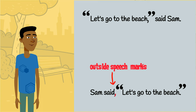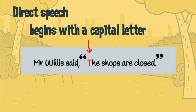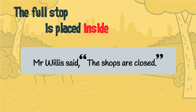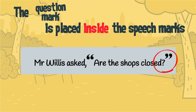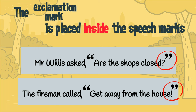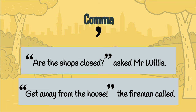Direct speech begins with a capital letter, even in cases where the direct speech is in the middle of the sentence. Where direct speech ends a sentence, the full stop is placed inside the speech marks. This is the same for question marks and exclamation marks, as long as it is the direct speech that contains the question or exclamation. If the order is changed and the direct speech begins the sentence, these punctuation marks still go inside the speech marks. In these cases, the comma that normally separates the direct speech from the speaker is left out.